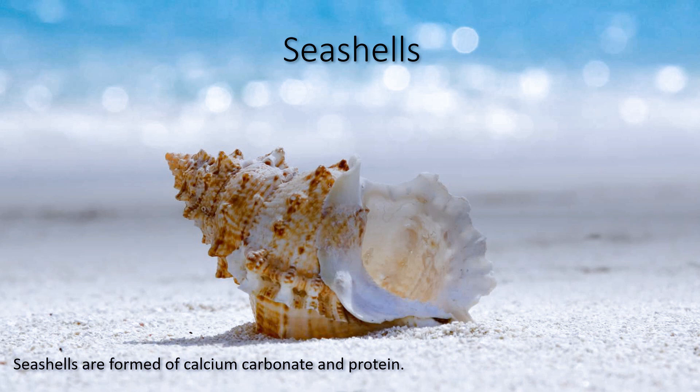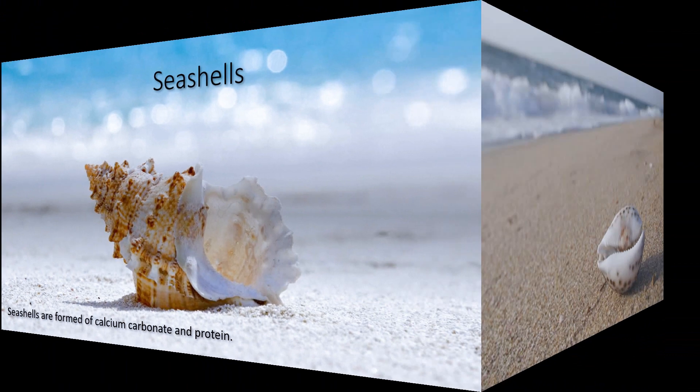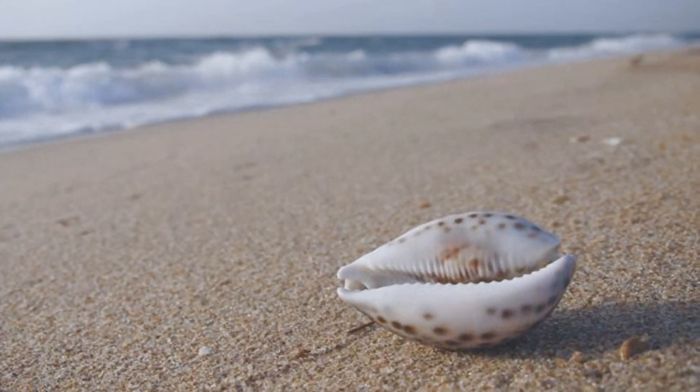The shells are usually washed on the beach after the animal inside has died. Seashells are used as decorative objects. Almost all genera of hermit crabs use or wear empty marine gastropod shells to protect themselves.